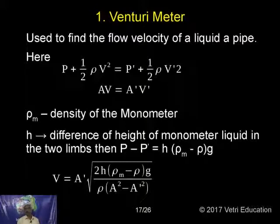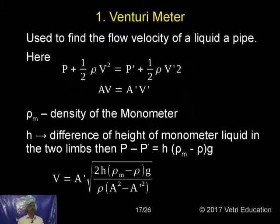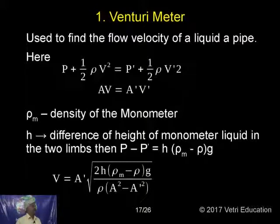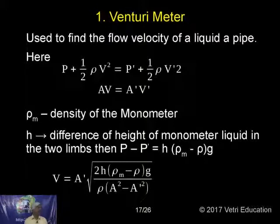Venturimeter — have you heard the word Ventura? That is a sharp motor company name you know; now it is called Ventura. Venturimeter is the meter used to find the flow velocity of liquid through a pipe. The velocity can be calculated using an instrument called Venturimeter.